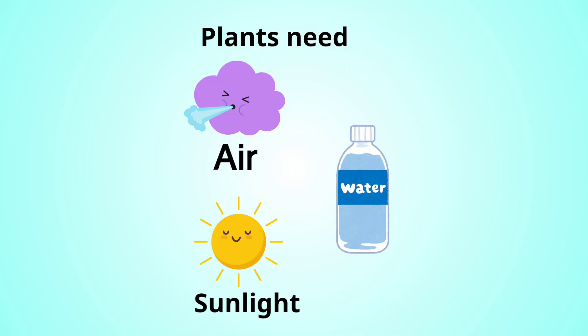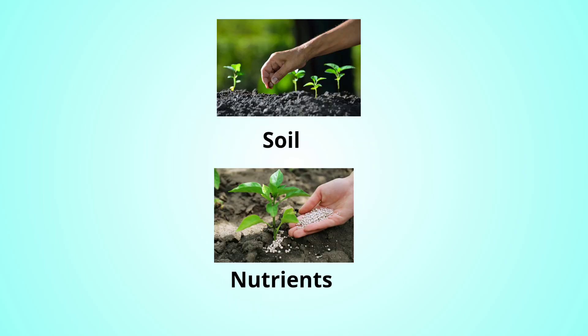We know that plants are living things. They need air, water, sunlight, and also they need soil and nutrients to grow.